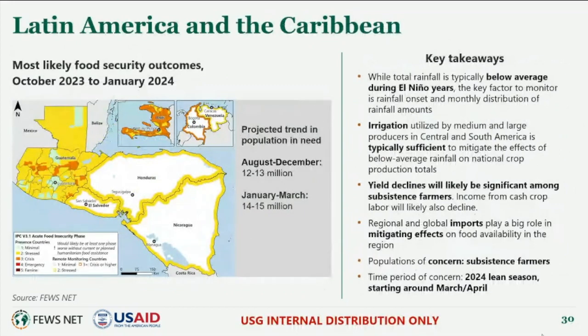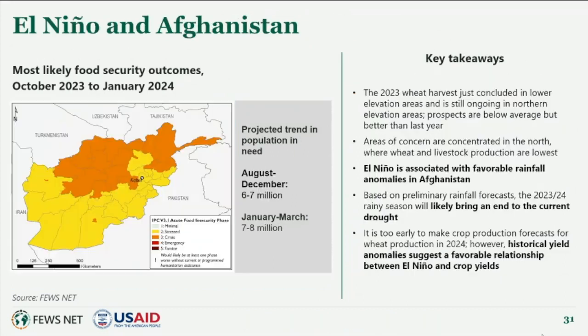In Central America and northern South America, we typically have below-average rainfall during El Niño years. Irrigation can compensate significantly, but subsistence farmers will be impacted since they don't have those mitigating resources, and therefore assistance is likely to be necessary. Finally, in Afghanistan, where there have been three years of drought in a row, we do expect relief — the drought will finally break as a consequence of above-average precipitation characteristic of El Niño in that part of the world.